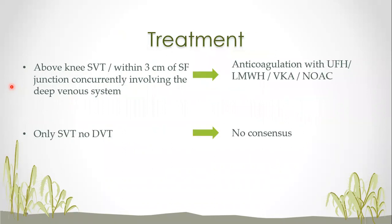If a patient has above-knee superficial venous thrombosis of the saphenous vein within three centimeters of the saphenofemoral junction — involving some of the deep venous system — there is consensus about treating with heparin or oral anticoagulants, including warfarin or newer oral anticoagulants. There is no question about treating this group.